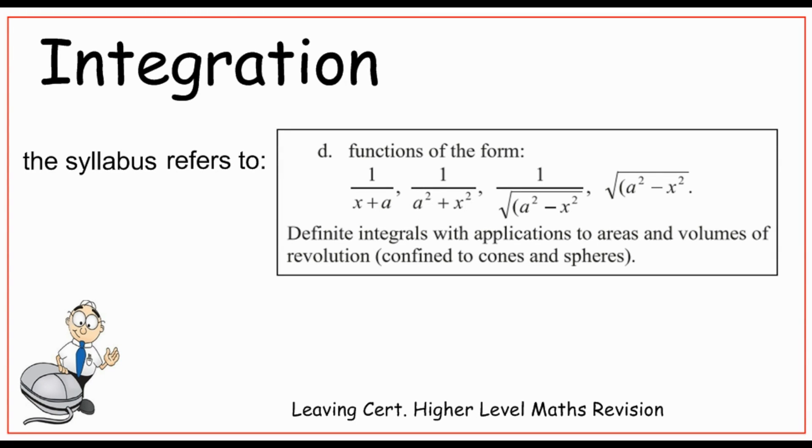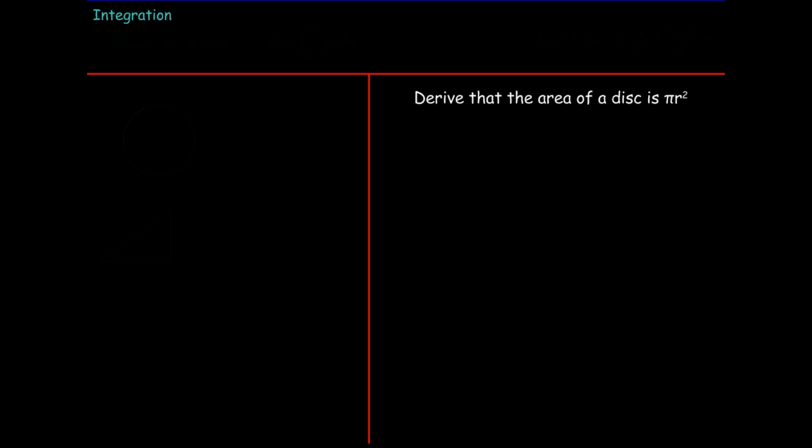The course integration says we have to be able to integrate a function of the formula square root of a squared minus x squared. It also says we need to be able to use definite integrals with applications to areas. In this example it involves both of these skills to write the area of a disk is pi r squared.